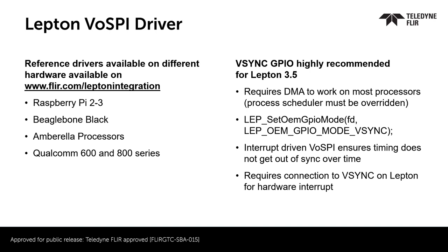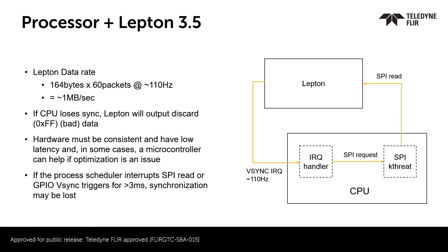If even a few milliseconds off, it can end up in an incomplete read, which would cause the Lepton to lose sync. Connecting Lepton to a processor produces a significant amount of data for an SPI interface. Generally, SPI is not meant to output video — especially 160x120 video — at the rate that Lepton 3.5 produces data.